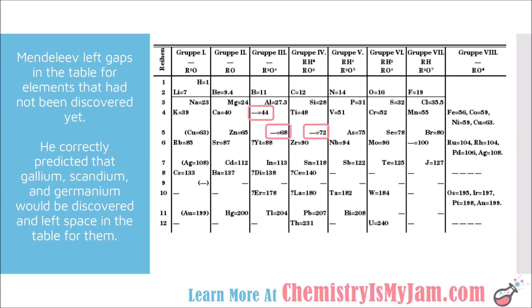Mendeleev's periodic table looked something like this, and you can see where he left gaps — which I have highlighted — for elements that had not been discovered yet. He correctly predicted that gallium, scandium, and germanium should be discovered, and he left a space in the table for each of them.